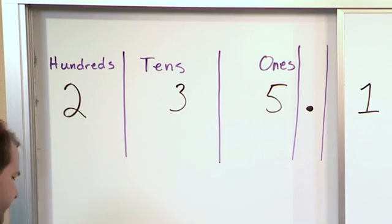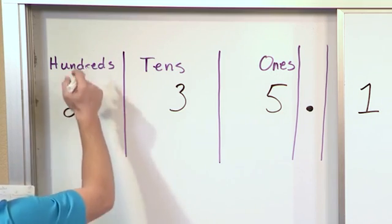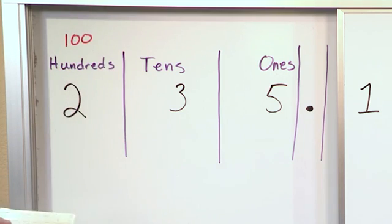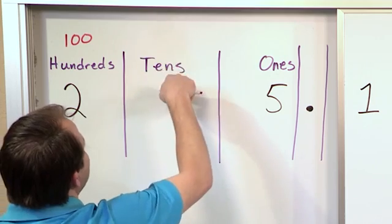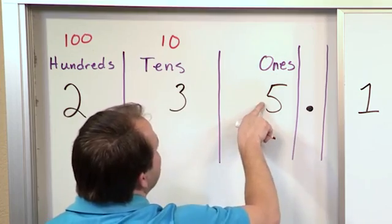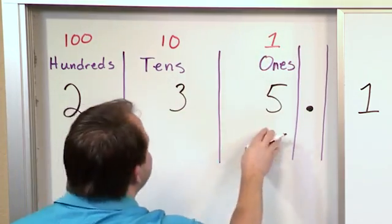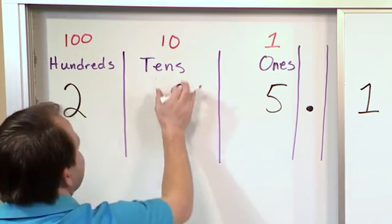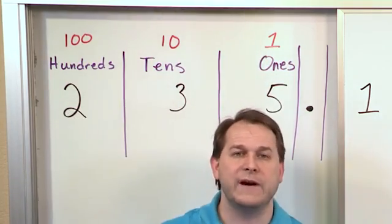is notice that we're saying this is hundreds place. So every number you have here is worth 100. That's why we call it the 100s place. This digit is called the tens place because every number we have here is worth 10. And this digit is called the ones place because every number we have here is worth 1. That's how we get 235 because two of these is worth 100, that's 200. Three of these is worth 10, that's 30. And five of these is worth just 1. So 235,